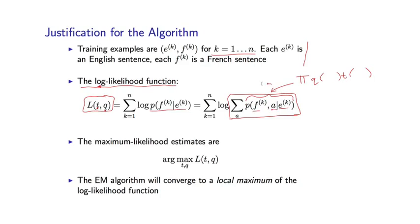And so you can see that this is clearly very directly a function of our Q and T parameters. As we vary the Q and T parameters, these probabilities will vary, and this likelihood function may go up or down.